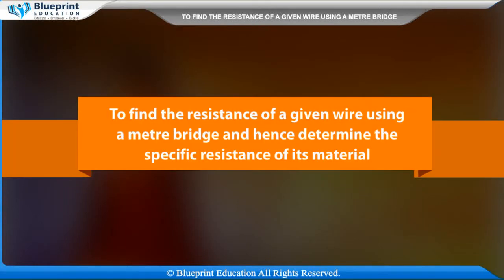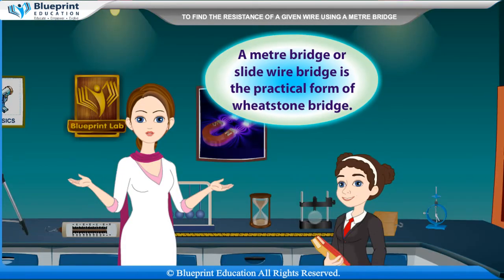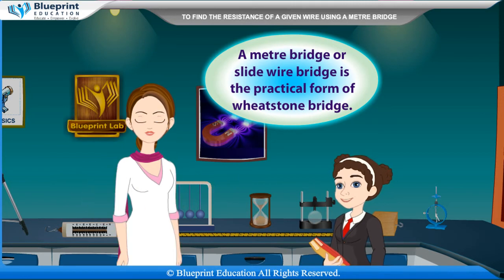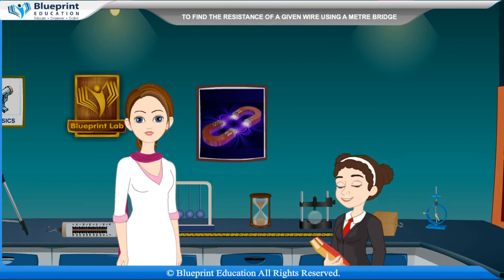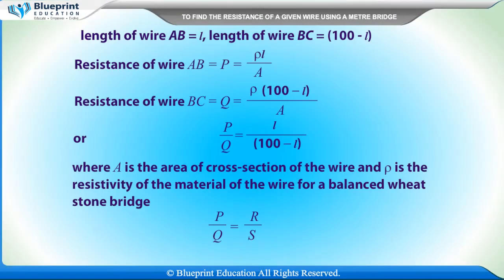Define the resistance of a given wire using a meter bridge and hence determine the specific resistance of its material. A meter bridge or slide wire bridge is the practical form of Wheatstone bridge. If the resistance applied by the resistance box R gives no deflection in the galvanometer at point B on wire AC, then the length of wire AB is equal to L and the length of wire BC is equal to 100 minus L.